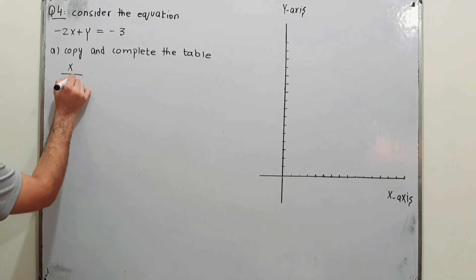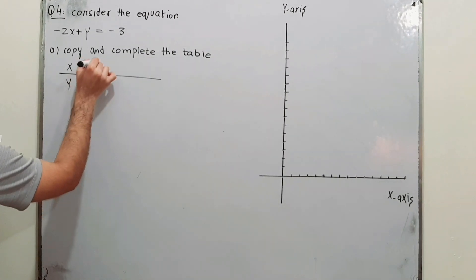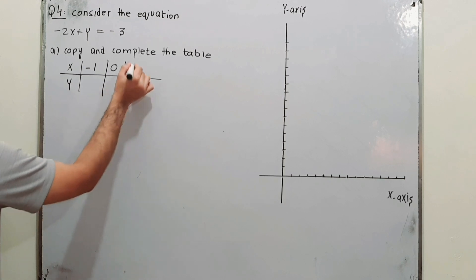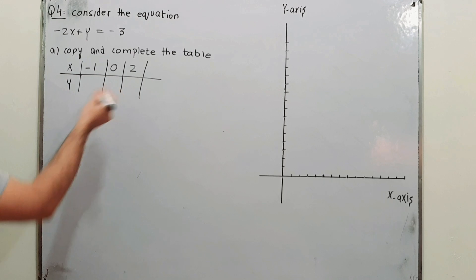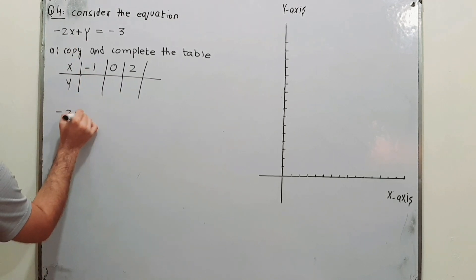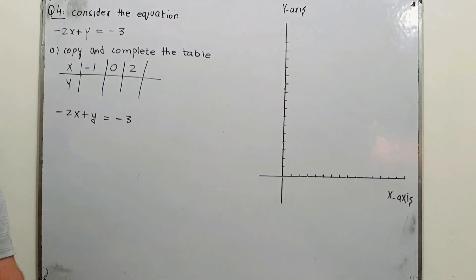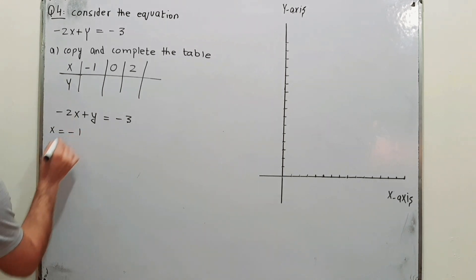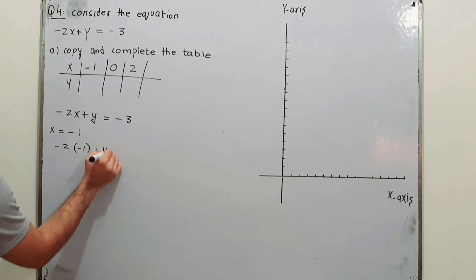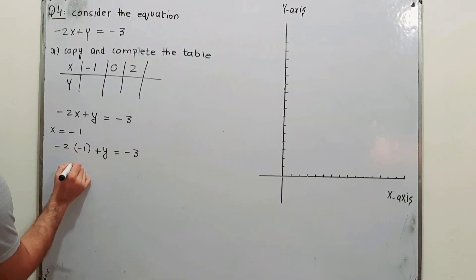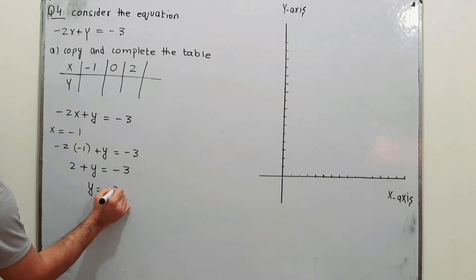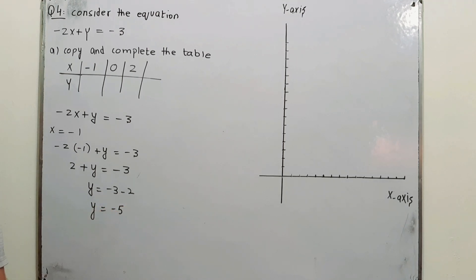The table has values of x and corresponding values of y. When x is minus 1, using the equation minus 2x plus y = minus 3, it becomes minus 2 into minus 1 plus y = minus 3, which gives 2 plus y = minus 3, so y = minus 5.